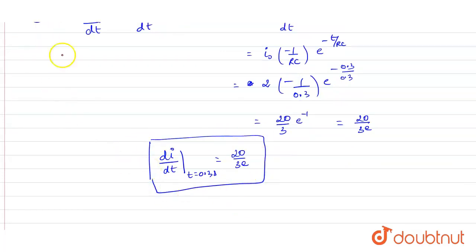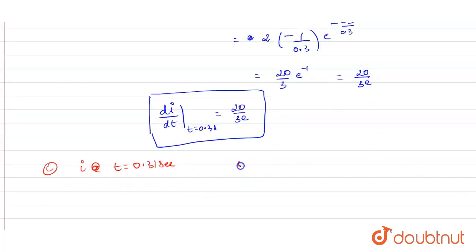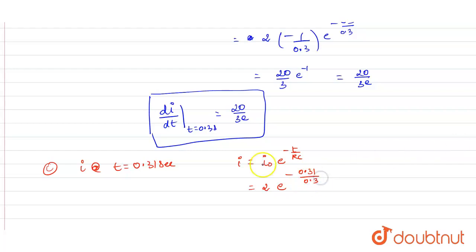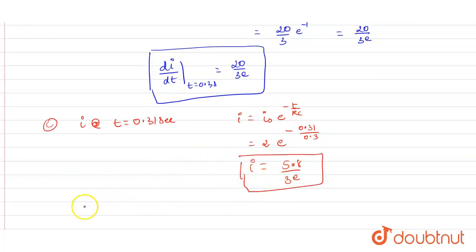In the third part, we calculate the current at T = 0.31 second. Substituting into I = I₀ e^(−T/RC): I₀ = 2, T = 0.31, RC = 0.3. This gives I = 2e^(−0.31/0.3) = 2e^(−31/30), which evaluates to approximately 5.8/(3e). So the current at T = 0.31 second is approximately 5.8/(3e) amperes.